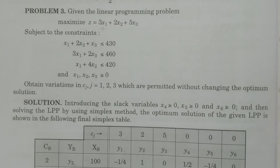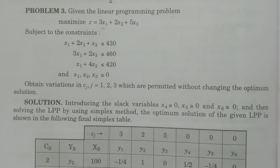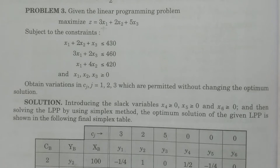To BSc Statistics students: in this class I explained one particular problem for explaining the changes in the coefficient of the objective function Cj — how the coefficient changes and how to calculate the variations to maintain the optimality condition.